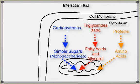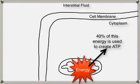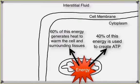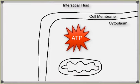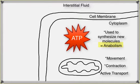In the mitochondria, enzymes continue to break organic molecules down, producing significant amounts of energy. Forty percent of this energy is used to convert ADP to ATP, and the other 60 percent escapes as heat that warms the interior of the cell and surrounding tissues. The ATP produced by the mitochondria is used to synthesize new organic molecules — this is called anabolism — and for other cell functions such as ciliary or cell movement, contraction, active transport, and cell division.